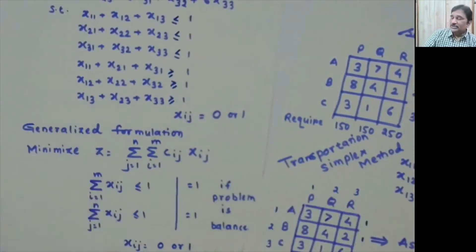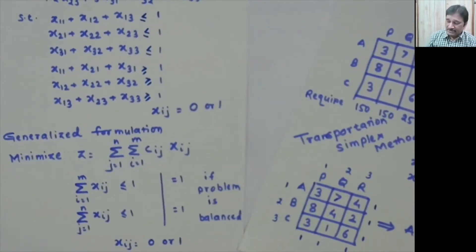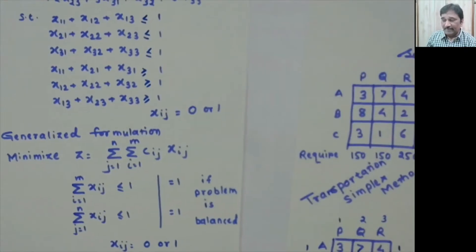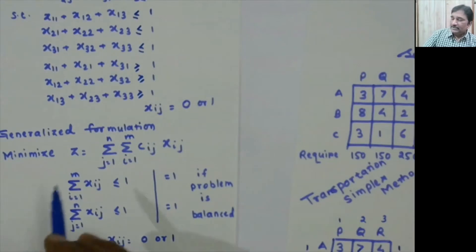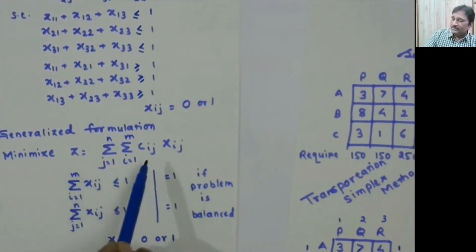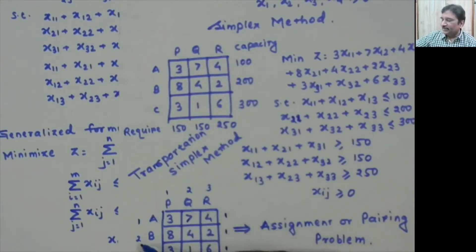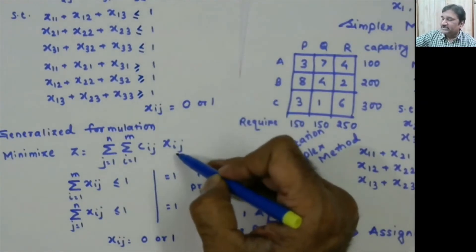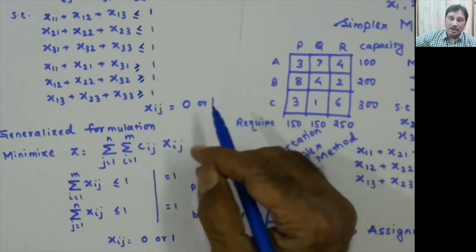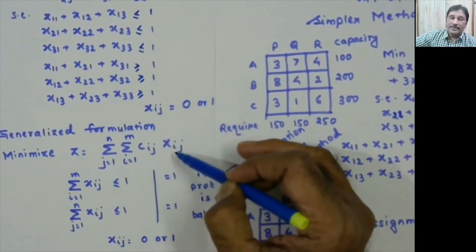For the generalized formulation with m rows and n columns, the objective function is: minimize Σ cij·xij. In a balanced assignment problem m = n, but we allow for m ≠ n. The constraints are: Σⱼ xij ≤ 1 for each row i (i = 1 to m), and Σᵢ xij ≤ 1 for each column j (j = 1 to n), with xij = 0 or 1.